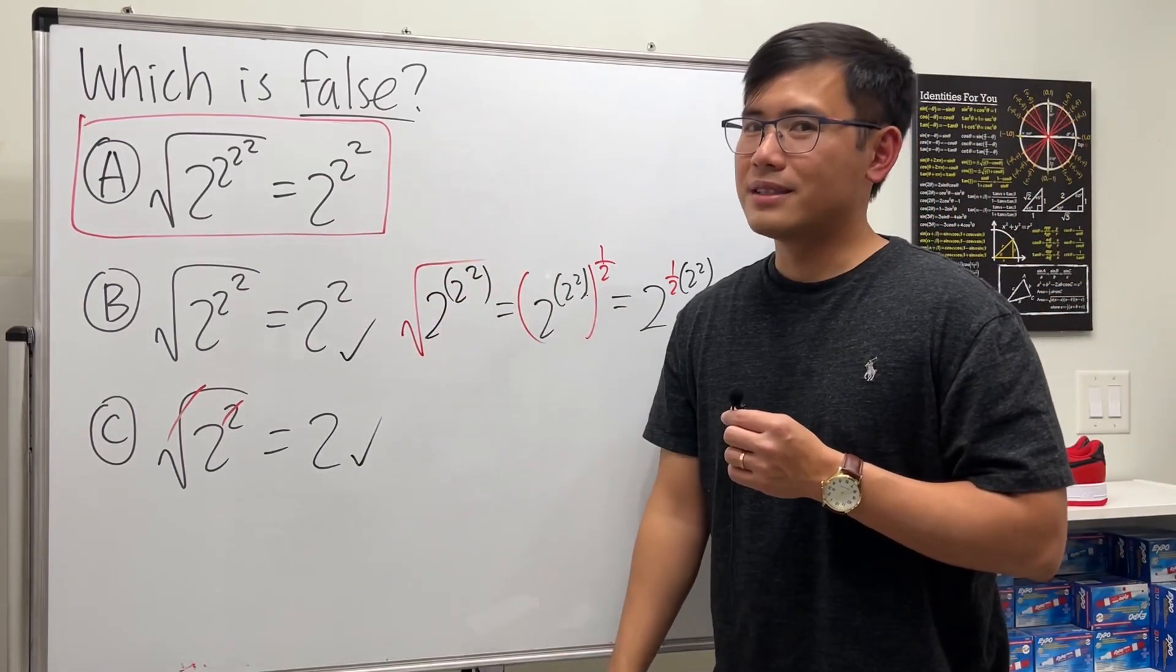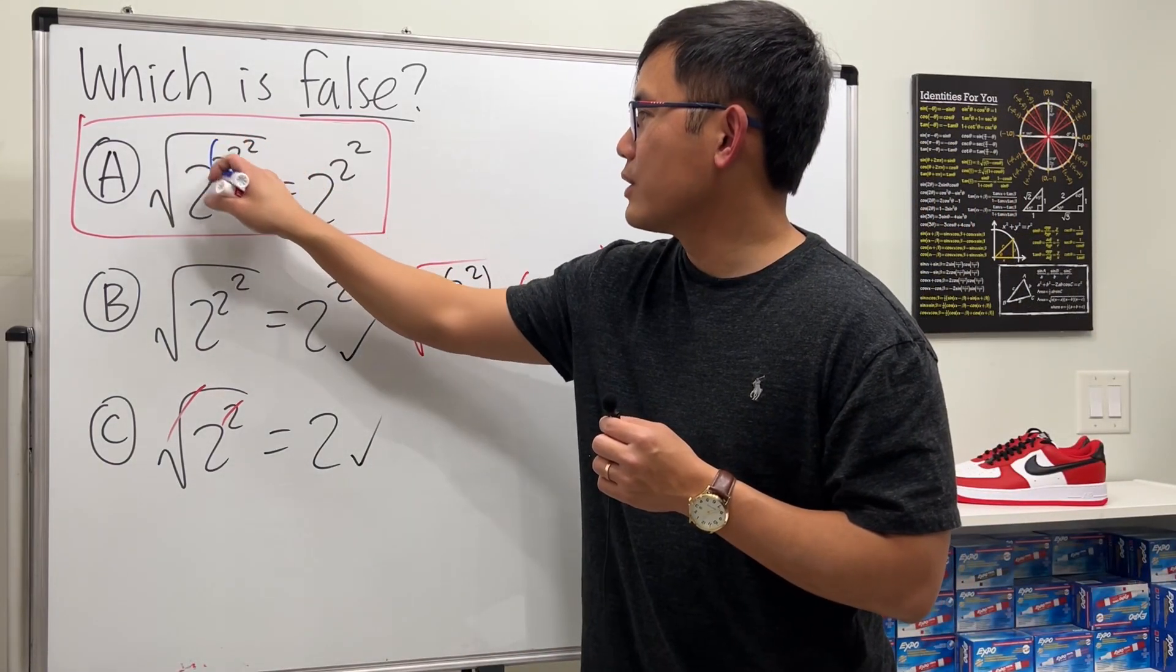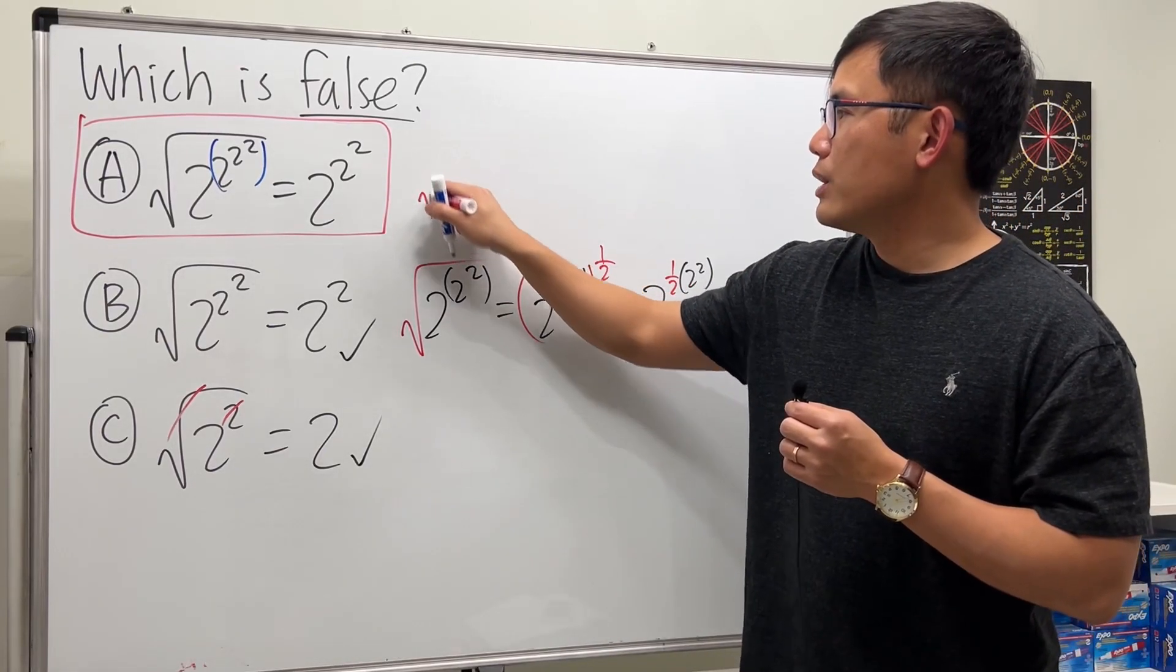So let's do the same thing we did earlier. In this case, we look at √(2^(2^(2^2))). Again, this is the same as the 1/2 power, so I can say 2^(1/2) times 2^(2^(2^2)).